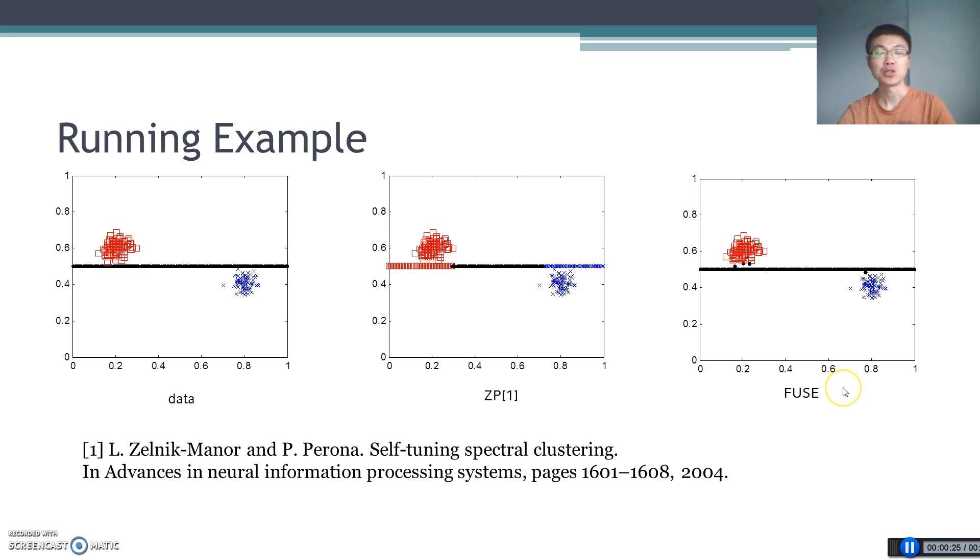Here, I'll show you a running example. Two Gaussian clusters and one Strap cluster are very close. The densities of these three clusters are different.